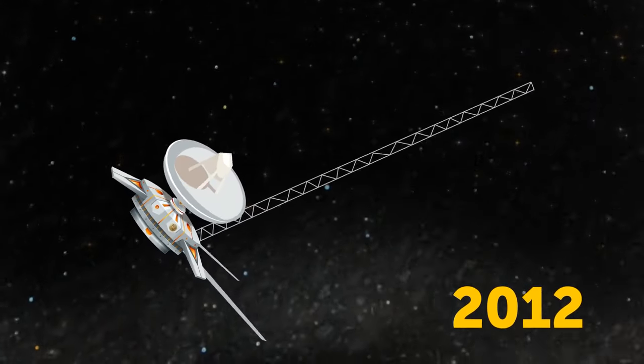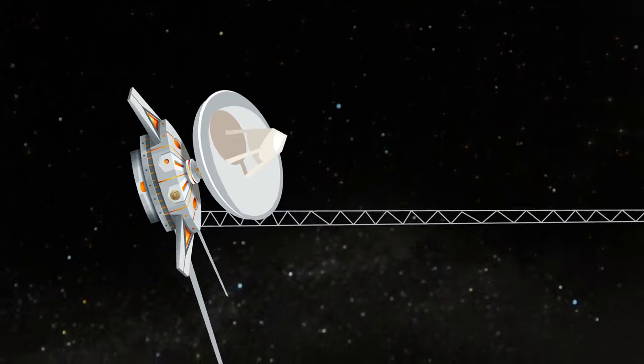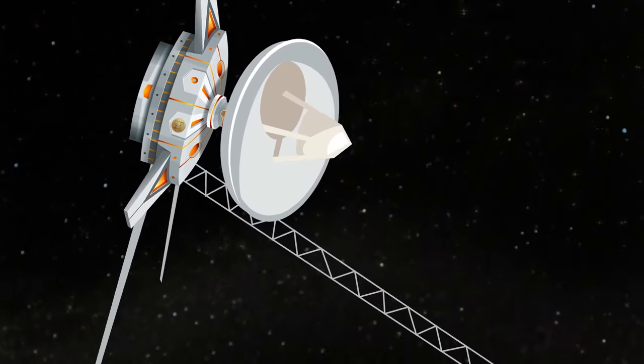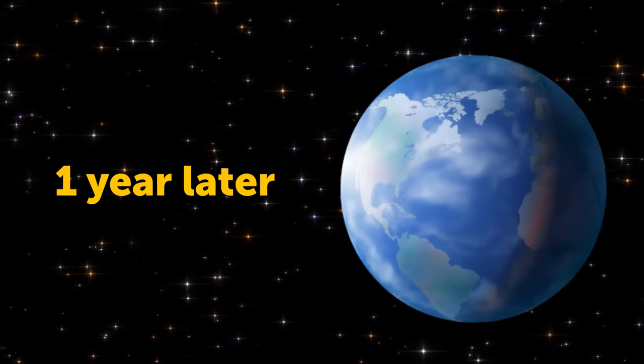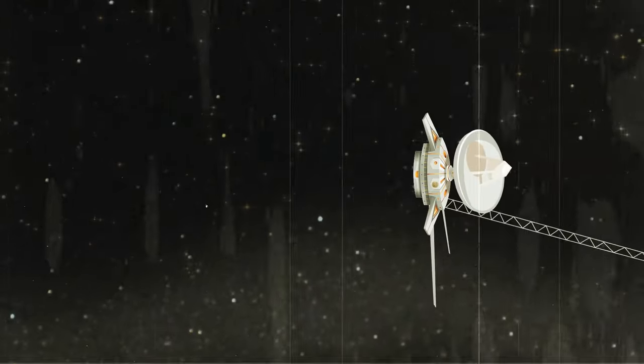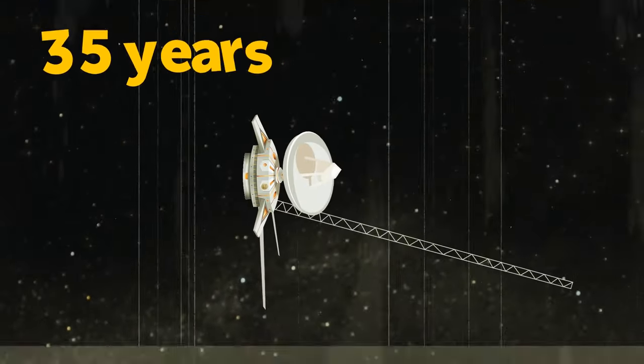In 2012, Voyager crossed this boundary and became the first ever human-made object in interstellar space. But the message from Voyager reporting this event came to Earth almost a year later because of the huge distance. It took 35 years for Voyager 1 to travel all this way.